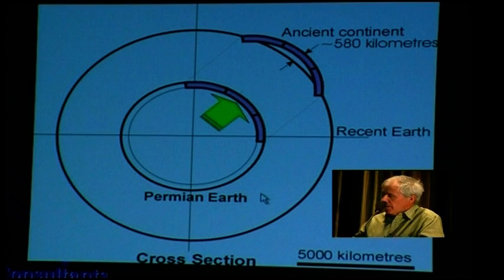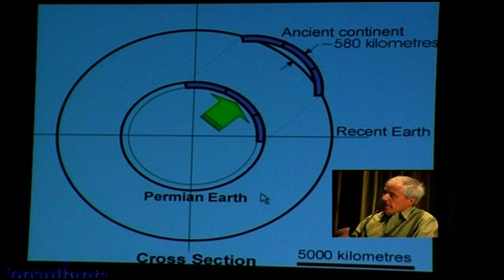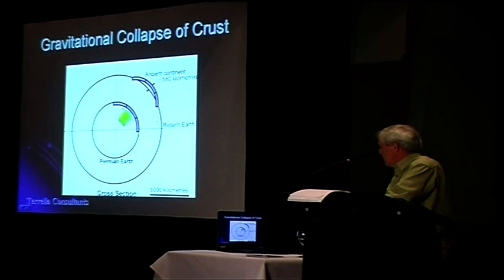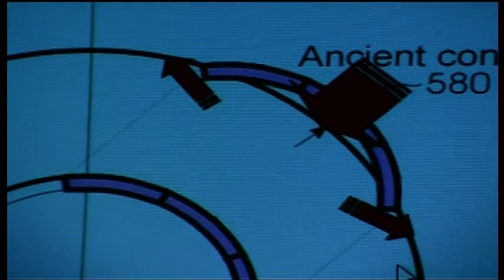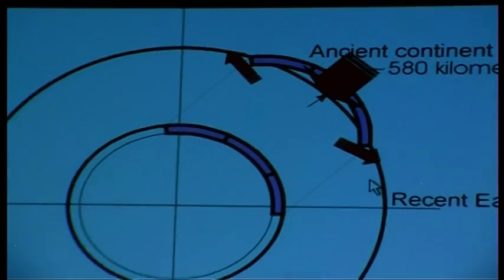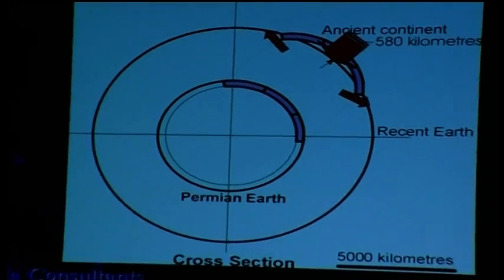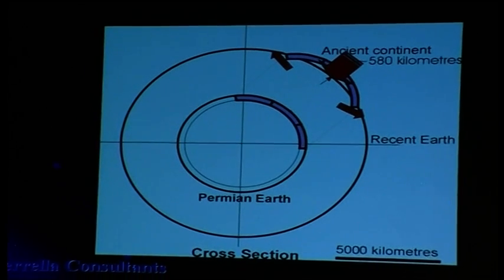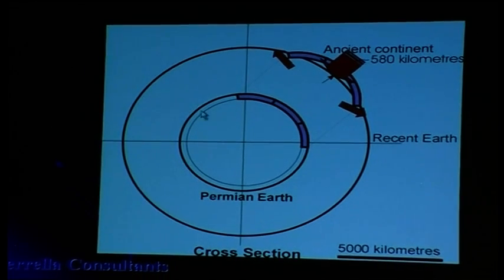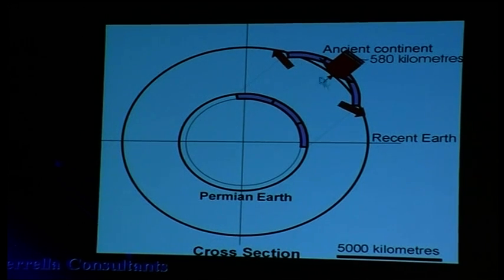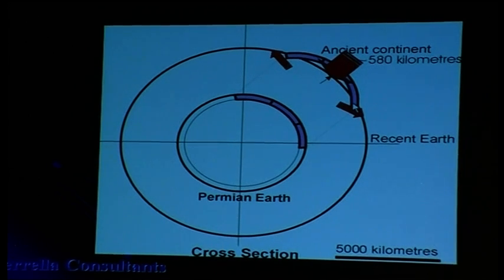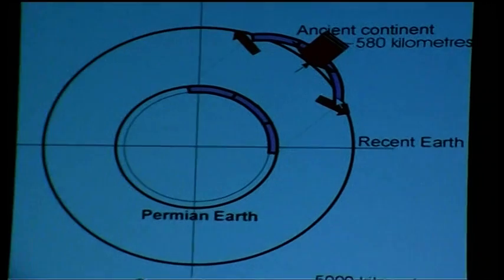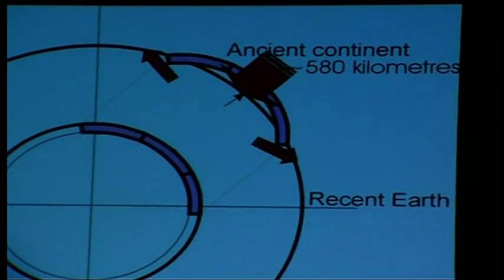So what happens when we increase radius is we get a progressive flattening of that surface curvature. This is a very important point to accept, is that you get a flattening of this surface curvature and also an extension of that radial component through here, the chord length through here. This doesn't happen all at once. It happens over a projected period of time, over a full period of time.